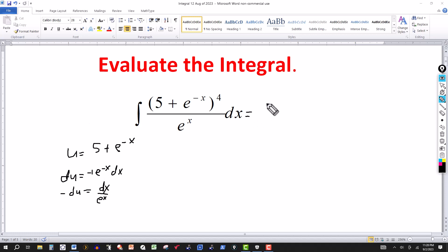And over here I'm going to transform this to an integral involving u. So 5 plus e to the minus x, that's your u. So that will be u to the fourth, and then the e to the x here, and then dx.